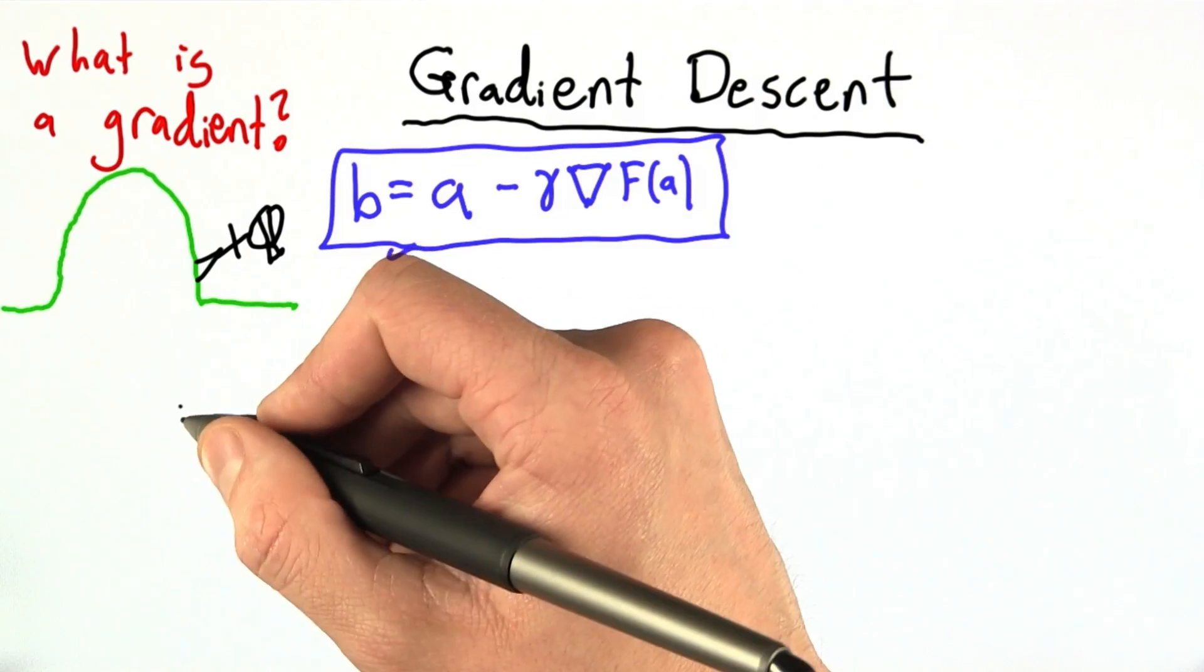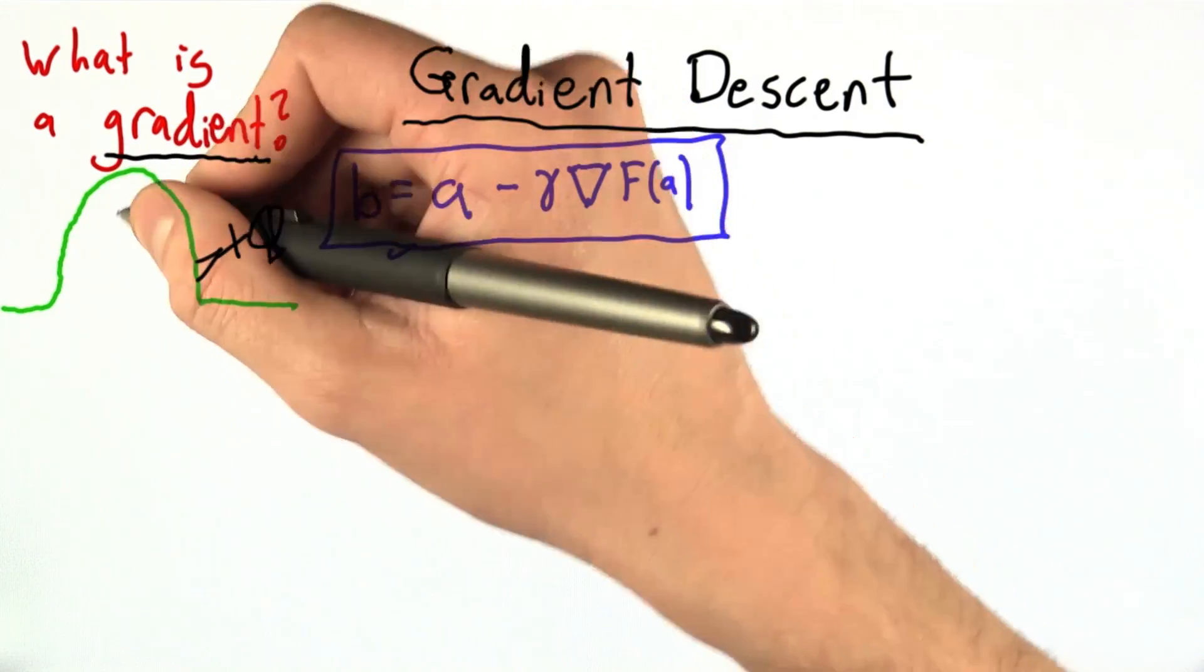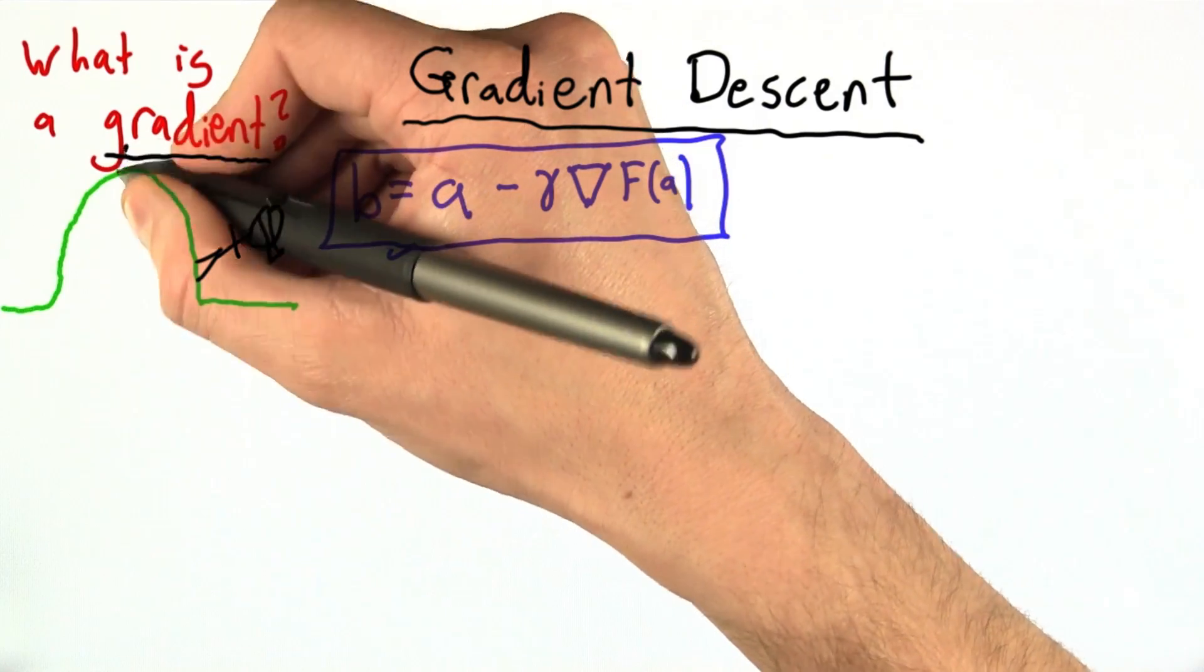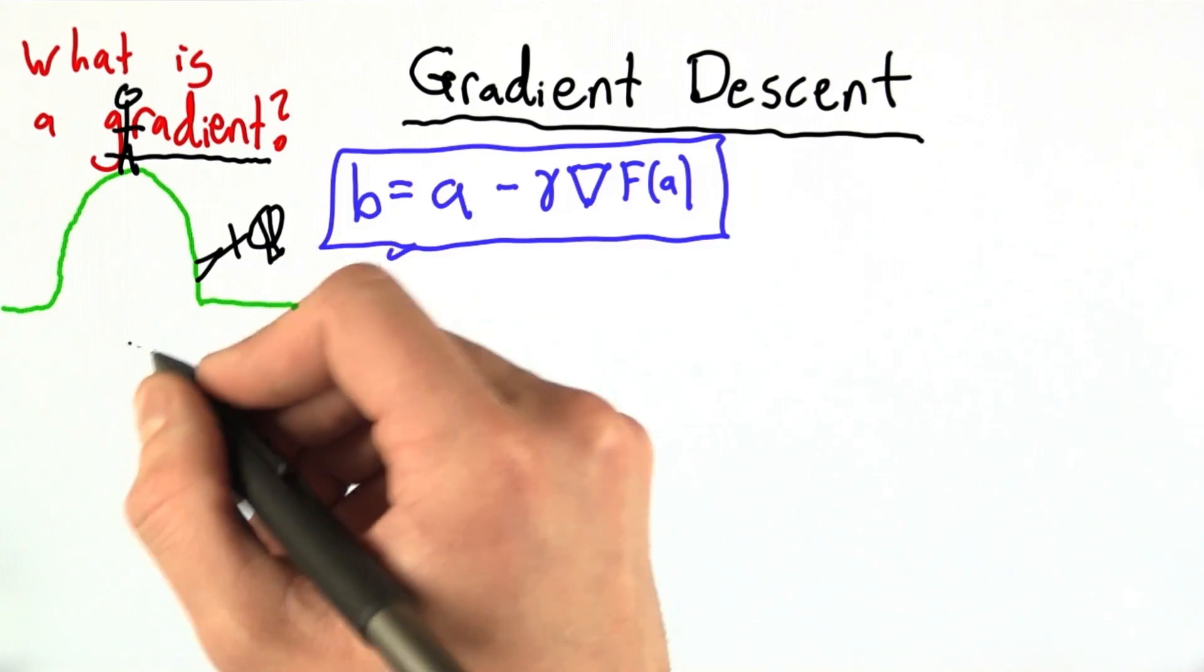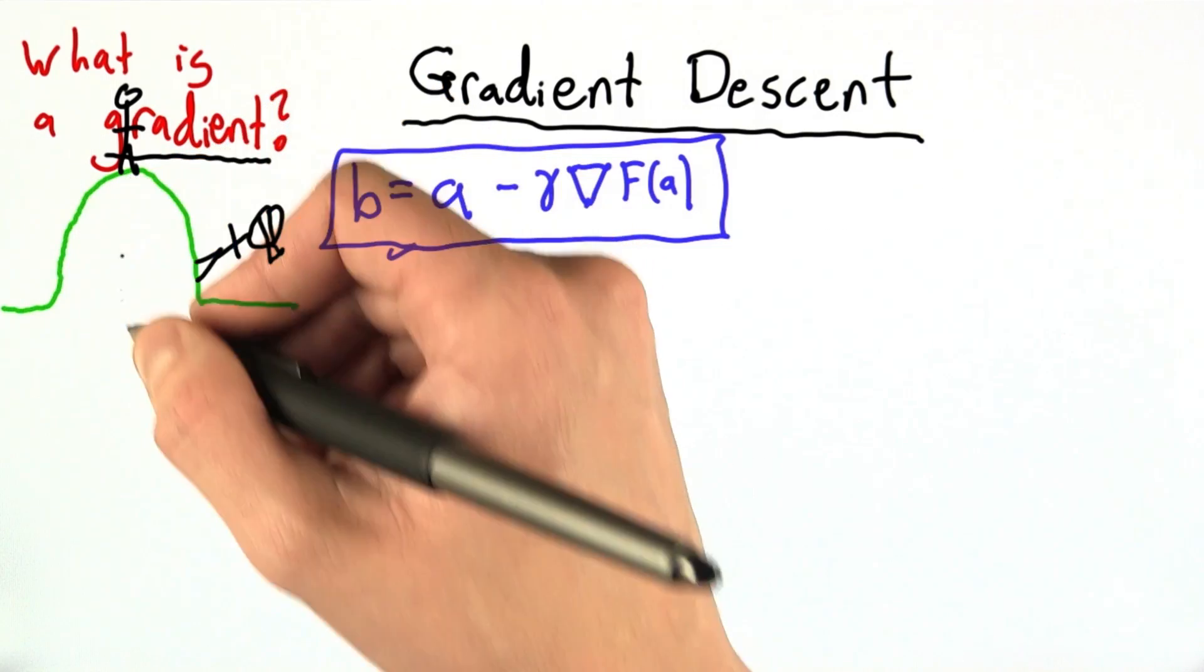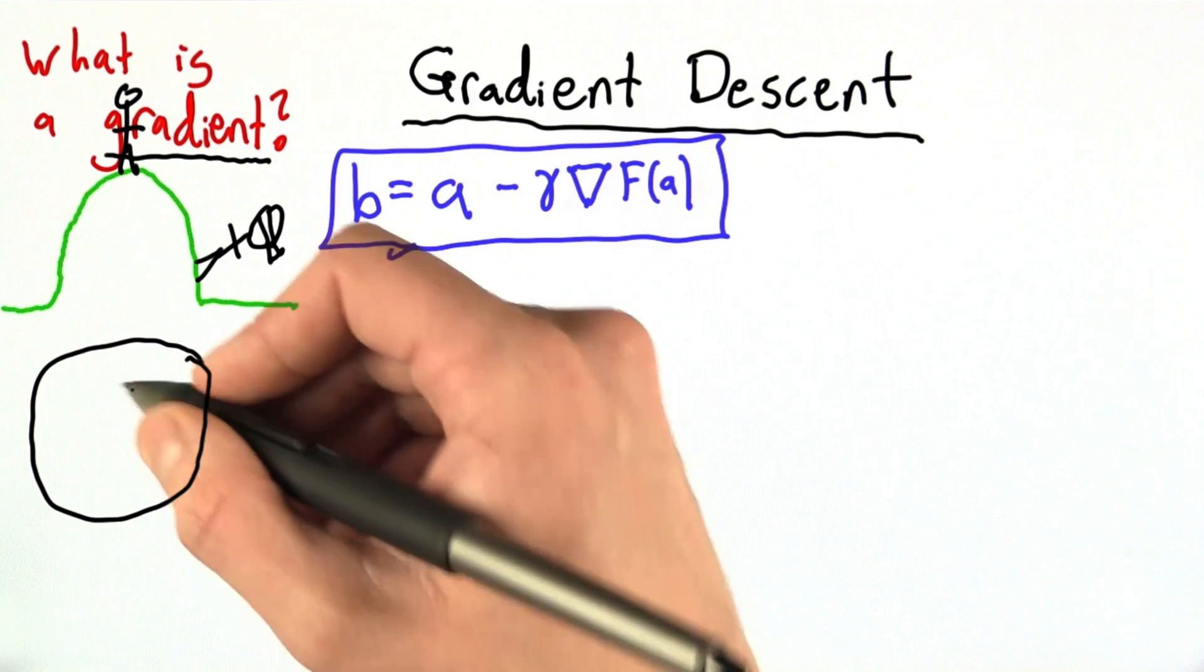So how can we describe this mathematically? And the way we're going to do that is by using the gradient. And when we do that, our climber is going to get to the top of the hill. So let's look at this hill from a top-down view instead of from the side. And I'm going to draw these isoclines.